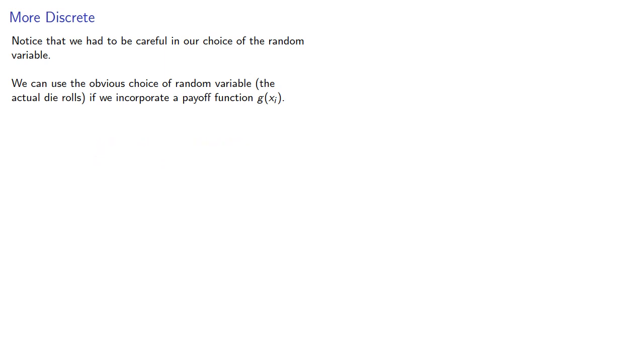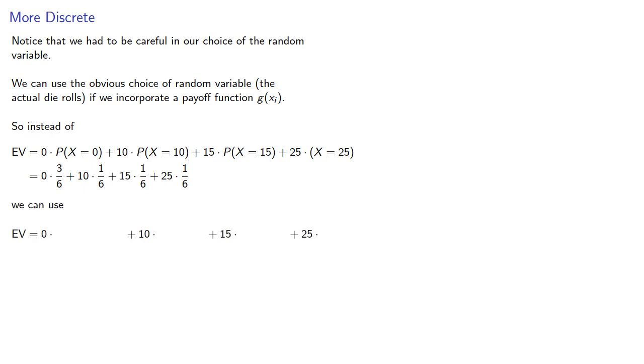But instead, we can use the payoffs of 0, 10, 15, or 25, times the probability of the outcome that resulted in that payoff. Namely, that we got a 1, 4, or 6, a 2, a 3, or a 5. And the computation works out in exactly the same way. The only difference is what we're using as our random variable.